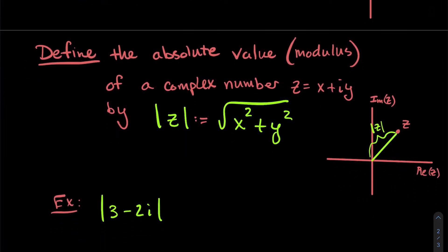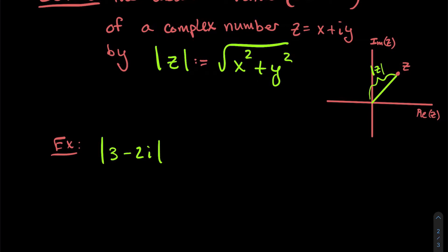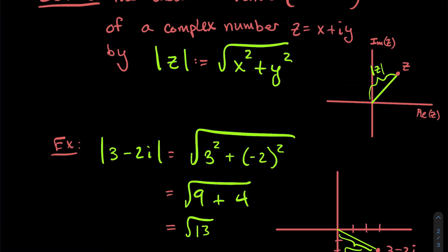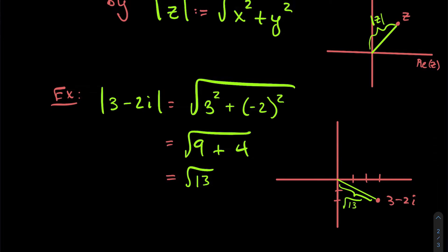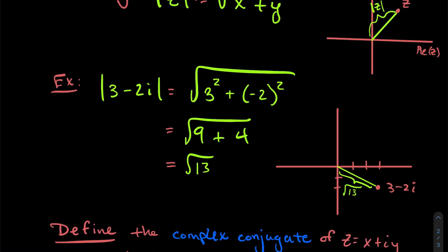Let's do an example. For the number 3 − 2i, the absolute value is √(3² + (−2)²) = √(9 + 4) = √13. So 3 − 2i is √13 units away from complex zero (0 + 0i). We're still thinking about absolute values as measuring distance from zero, just like for real numbers on the real number line.